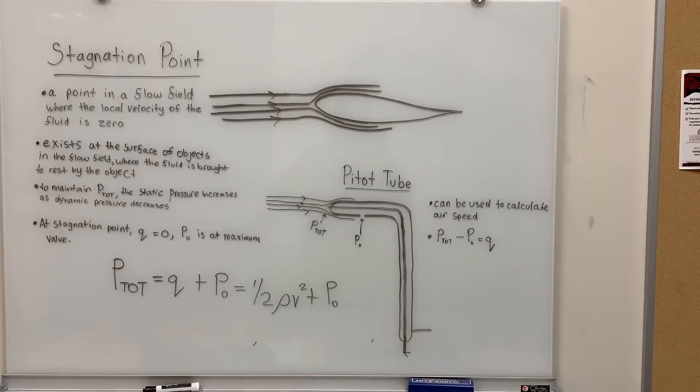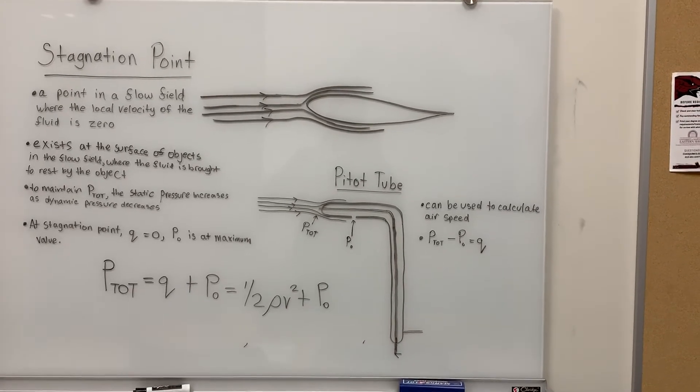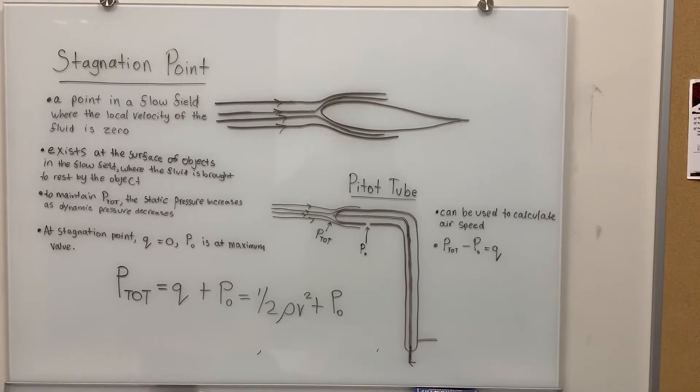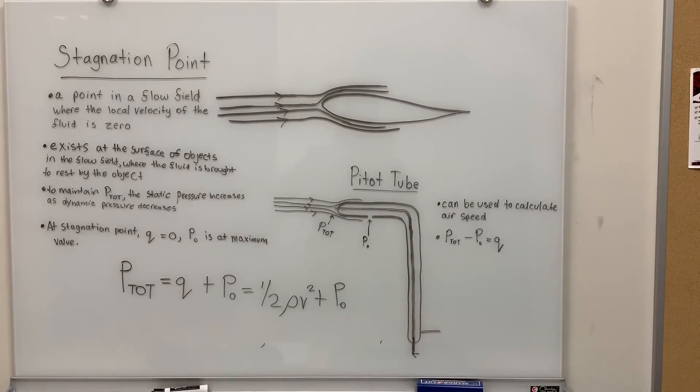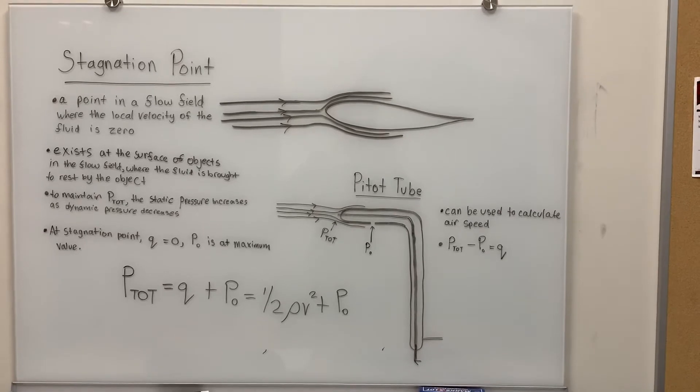Using Bernoulli's equation, the dynamic pressure of the air flow around the pitot tube can be calculated by subtracting the static pressure from the total pressure.